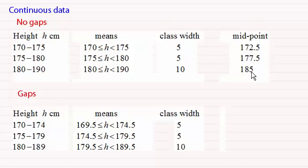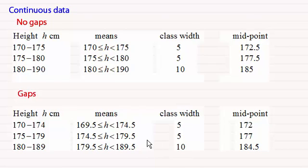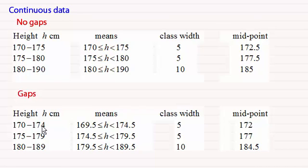For the second set of class intervals, when it comes to midpoints, again we add together the lower and upper bounds and divide by 2, and you'll get the same results. You could argue that because of symmetry — decreasing 170 by half a unit and increasing 174 by half a unit cancels out — you'd get exactly the same answers by just adding those original values and dividing by 2. For example, 170 plus 174 divided by 2 gives 172, and 180 plus 189 divided by 2 gives 184.5. It's the class width that depends on the adjusted upper and lower bounds.